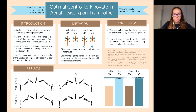Hello everyone, my name is Eve Charbonneau and today I will present my research entitled Optimal Control to Innovate in Aerial Twisting on Trampoline. Aerial twists are created by tilting the body in order to transfer angular momentum from the somersault axis to the twisting axis. It is difficult for coaches to create new acrobatics without putting their athletes at risk.